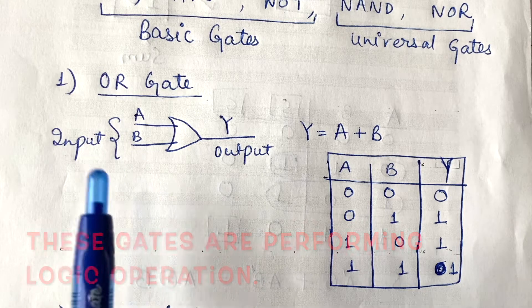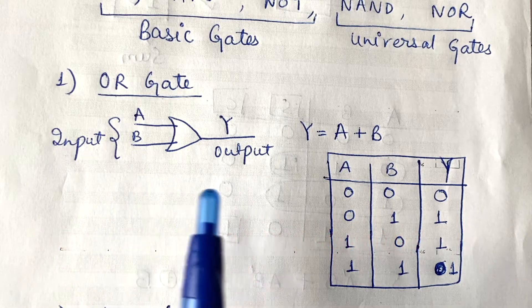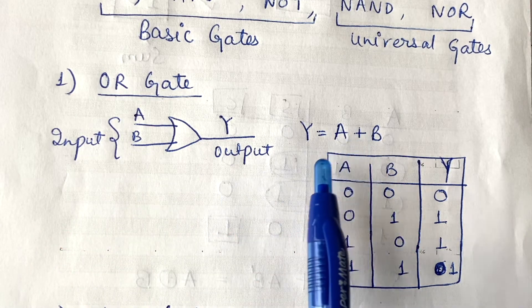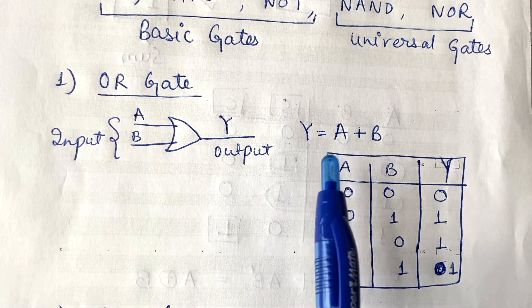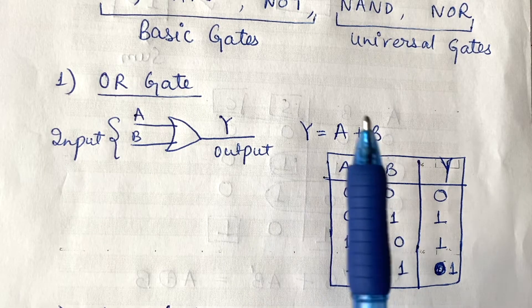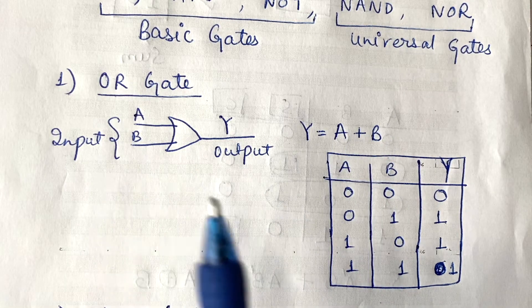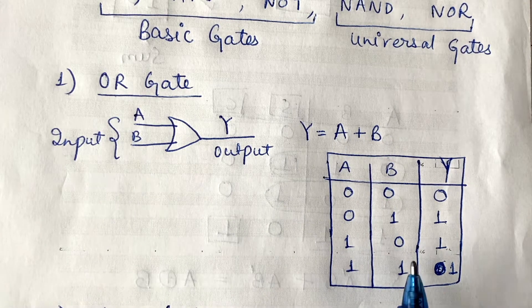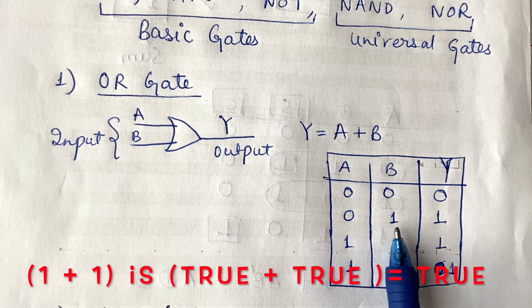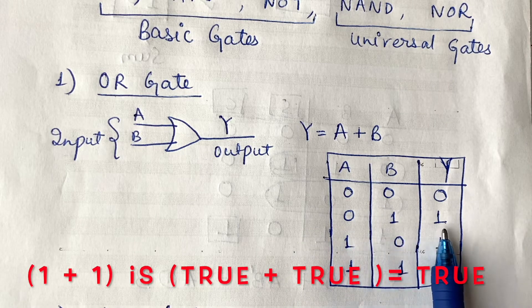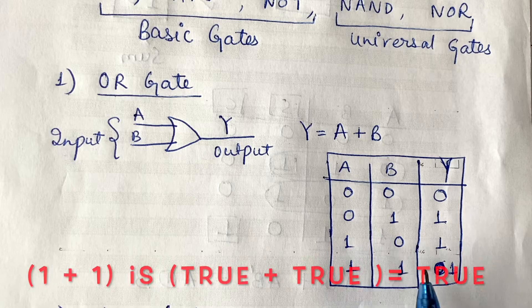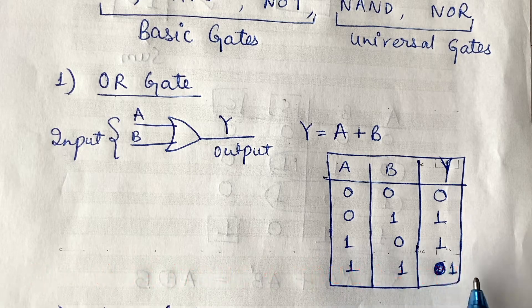This is the symbol of the OR gate and A plus B is its boolean expression. The full truth table: 0 plus 0 is 0, 0 plus 1 is 1, 1 plus 0 is 1, and 1 plus 1 is 1.